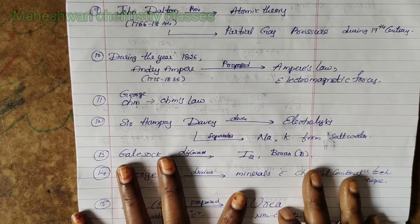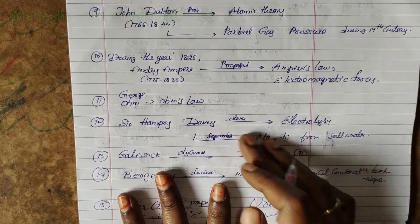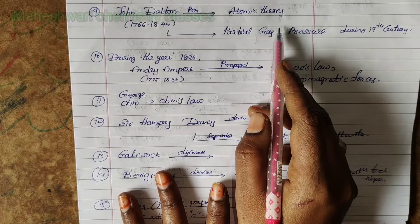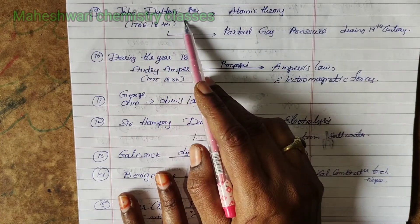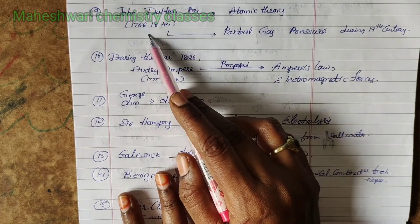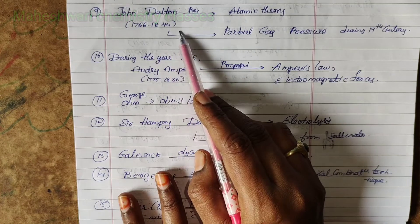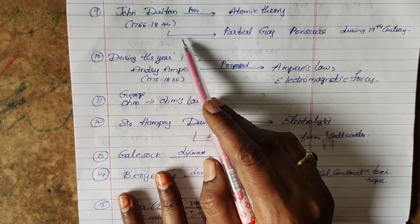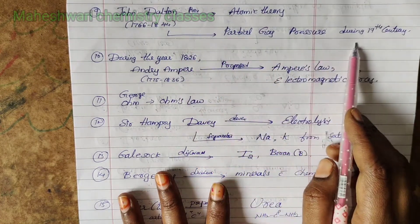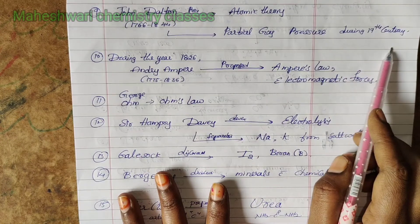Ninth point: John Dalton proposed atomic theory. Time period 1766 to 1844. John Dalton also proposed the law of partial gas pressure during the 19th century.